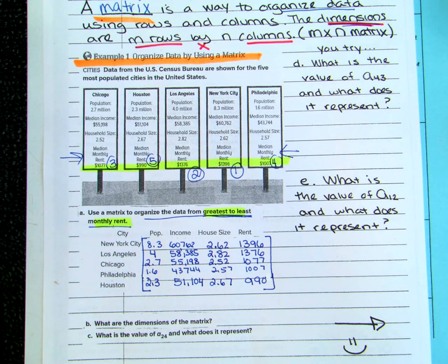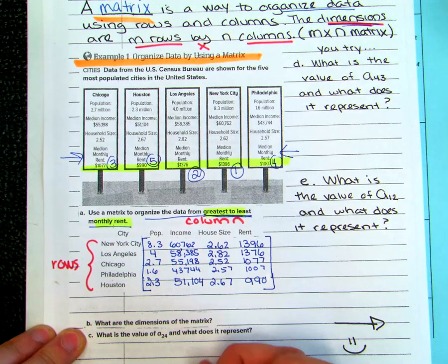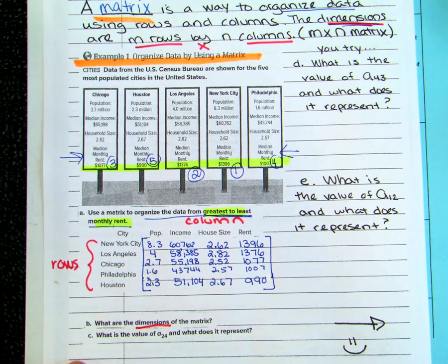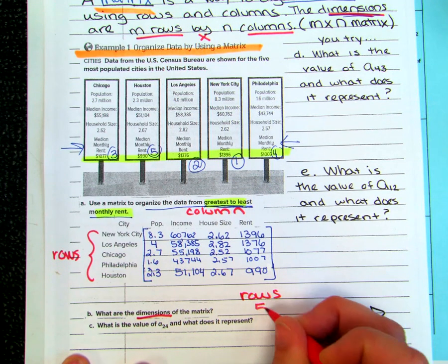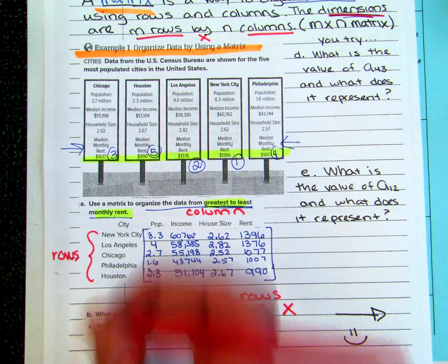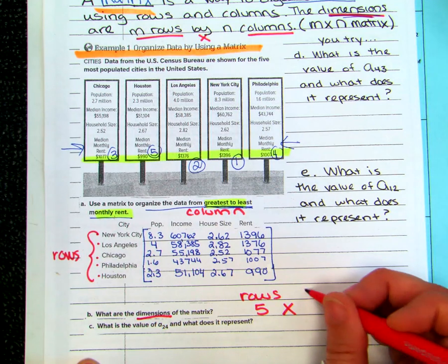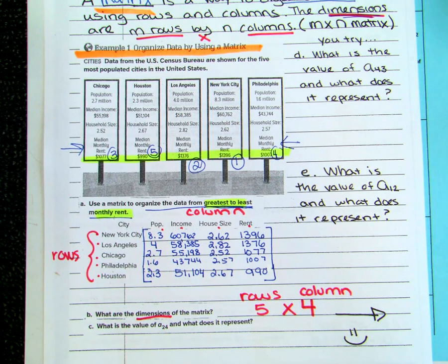Now, what are the dimensions? I go rows by columns. Rows go straight across and columns go straight down vertically. How many rows? Five. And how many columns? Four. So we would call this a five-by-four matrix — five rows by four columns. Always count rows first.